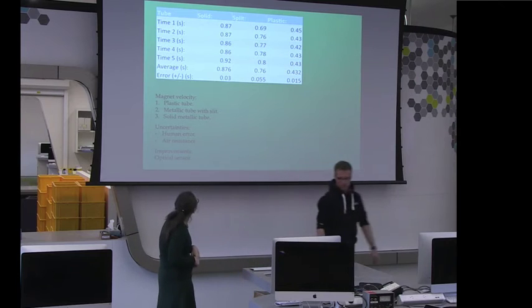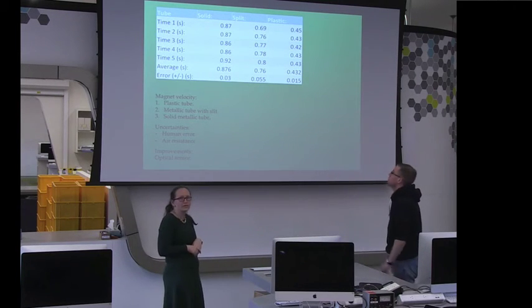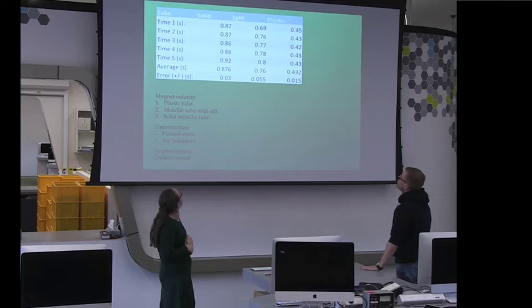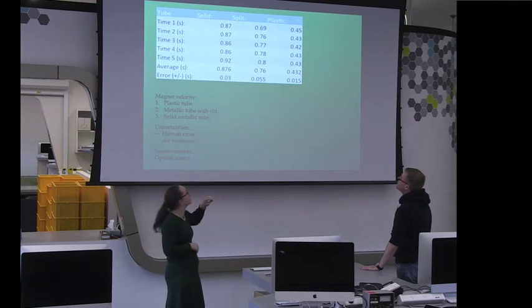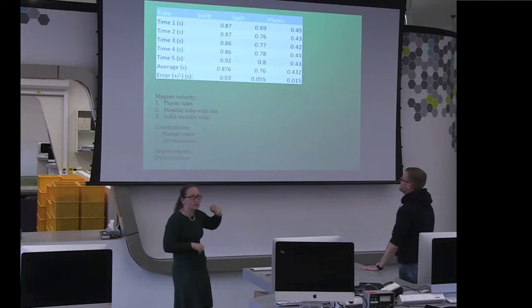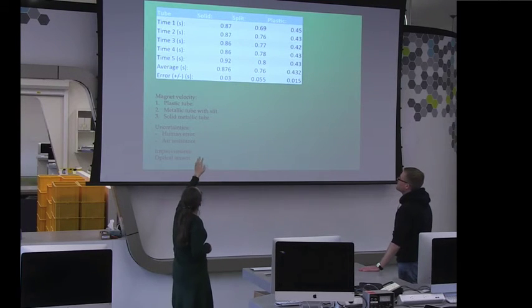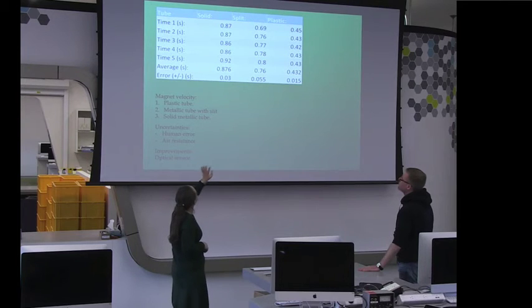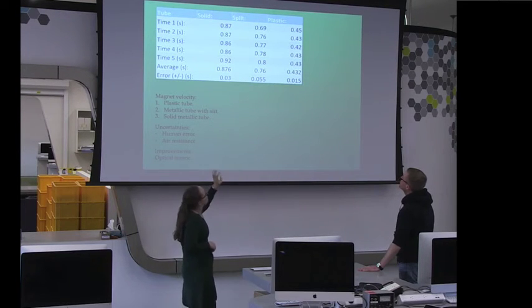So this shows our results from that first experiment where we have the different materials and then we have all the times that it takes. And one of the uncertainties was human error because I think we didn't do it so great. And you can see our averages up there and our errors.